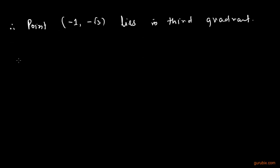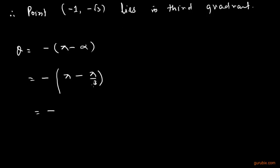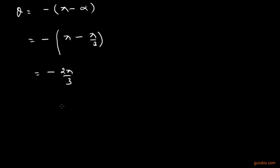This means the argument theta equals minus pi minus alpha. Here we have pi minus alpha, where alpha is pi by 3, then the value is minus 2 pi by 3. This means the argument of the complex number is minus 2 pi by 3.